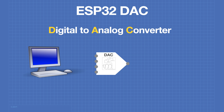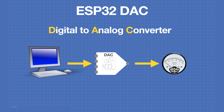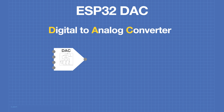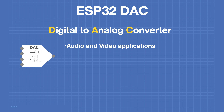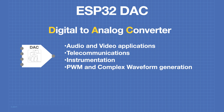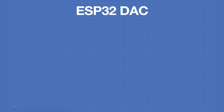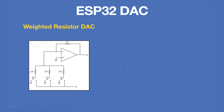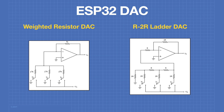A digital-to-analog converter is a device that has a digital input and an analog output. The analog output is in proportion to the value of the digital input. DACs are used in audio and video applications, telecommunications, instrumentation, pulse-width modulation and complex waveform generation, and as digital potentiometers.